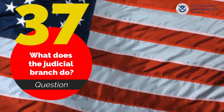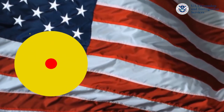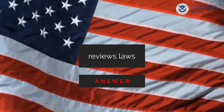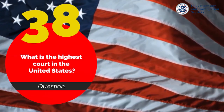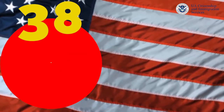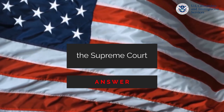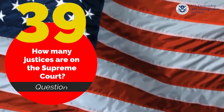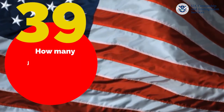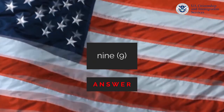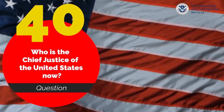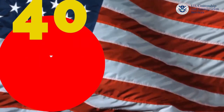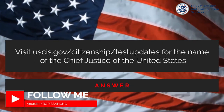What does the judicial branch do? Review laws. What is the highest court in the United States? The Supreme Court. How many justices are on the Supreme Court? Nine. Who is the chief justice of the United States now? Check the link or the description in this video.